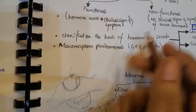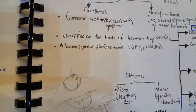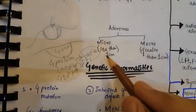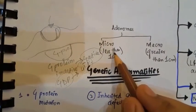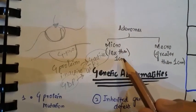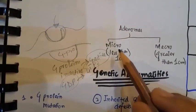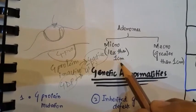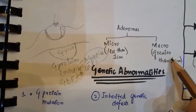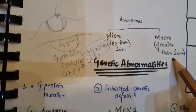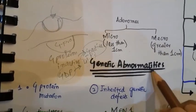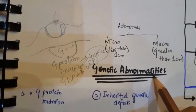Adenomas can be micro adenomas and macro adenomas. When they have a size less than one centimeter, they are known as micro adenomas. When they have a size greater than one centimeter, they are known as macro adenomas.